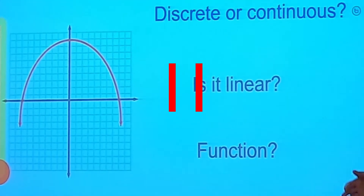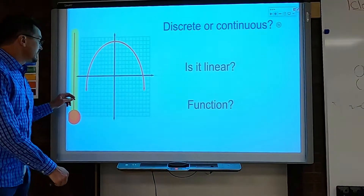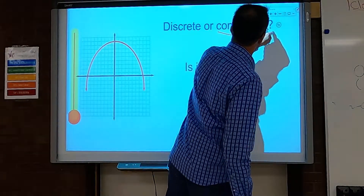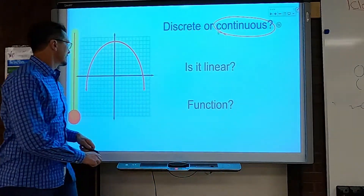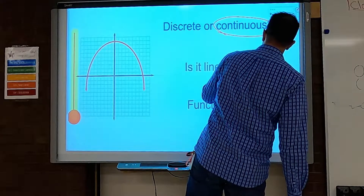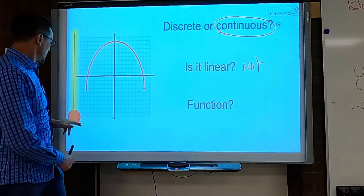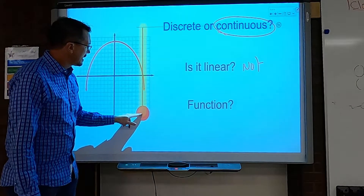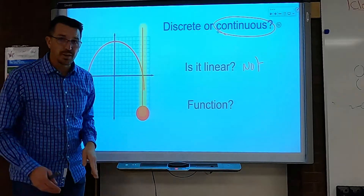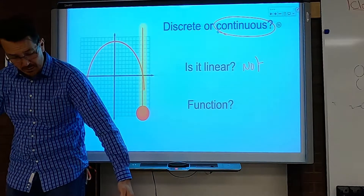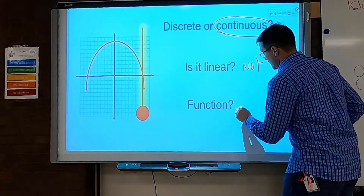Try this one and hit pause. Discrete or continuous? It is a continuous red line with no breaks. Is it linear? No — unless rainbows are linear, this is not linear. Is it a function? I do the vertical line test and I don't see any repeats. This is a parabola flipped upside down — it keeps going out and never repeats the same x-value, so yes, this is a function.